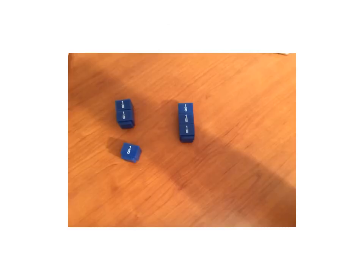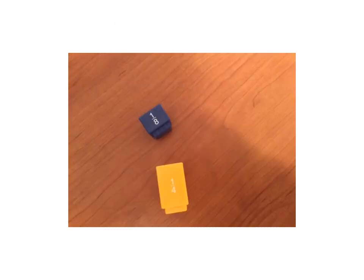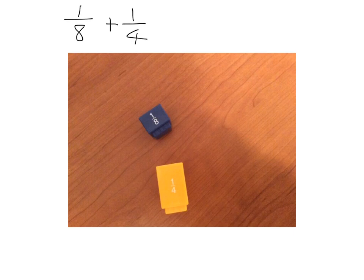Adding and subtracting fractions requires a bit more effort. If the denominators are the same, there's no problem. For example, if we've got 1 eighth and we add 2 eighths to it, putting them together we get 3 eighths — easy. But when we've got 1 eighth and 1 quarter, we've got 2 different types of pieces, and we can't add them together because they are different size pieces.